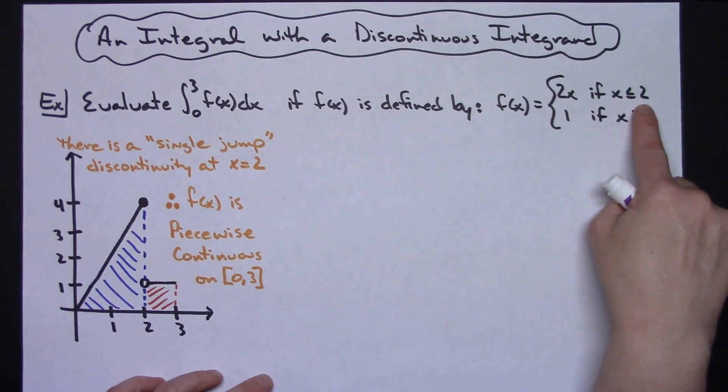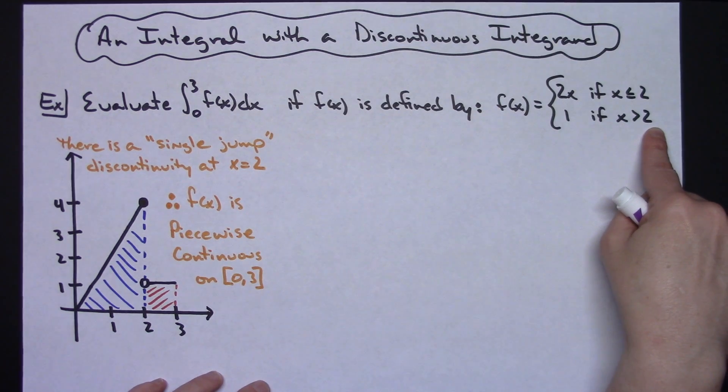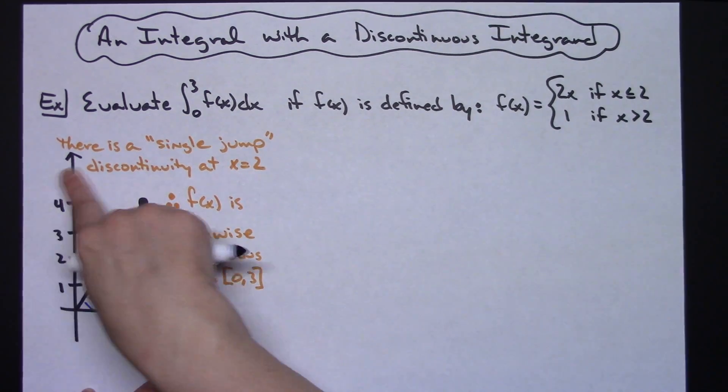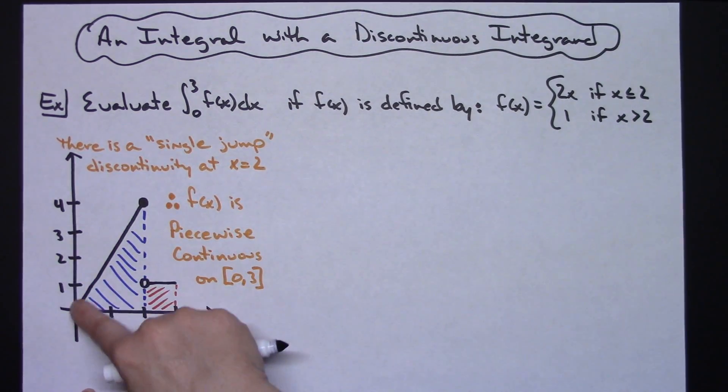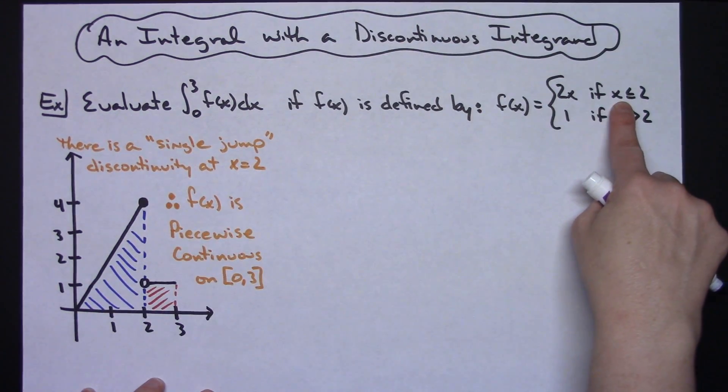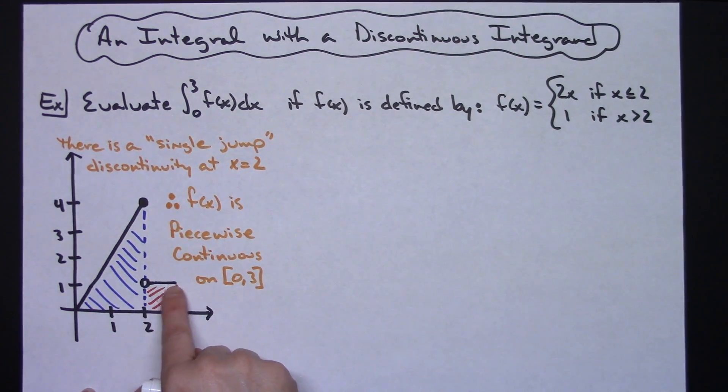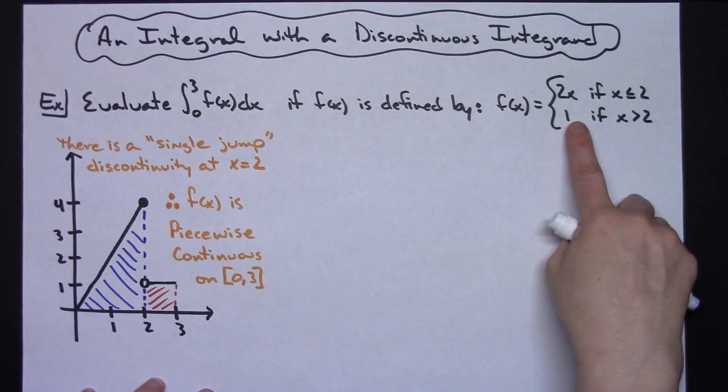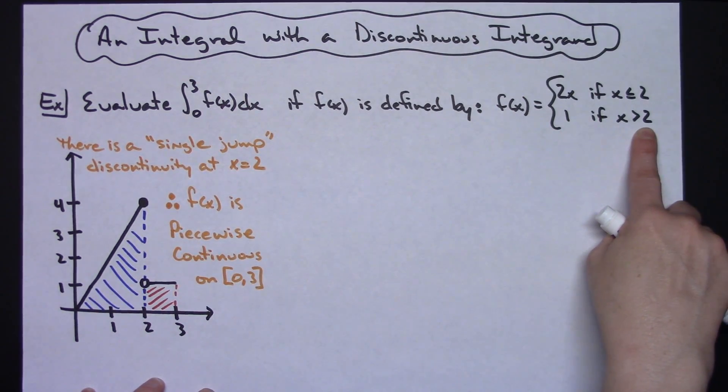we've got 2x if x is less than or equal to 2, and 1 if x is greater than 2. So to save a little bit of time, I have already sketched this function out. We've got this portion right here, which is my 2x if x is less than or equal to 2, and we've got this little line right here for 1 if x is greater than 2.